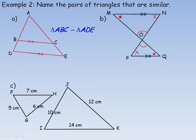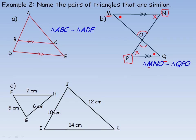Now we have three pairs of equal angles, so the triangles have to be similar. Notice that angle M corresponds to angle Q, and P and N correspond. So where you see P in one triangle, you see N in the other. The relationship would be written as: MNO is similar to QPO. M corresponds to Q, and N corresponds to P — so N is second in the first triangle and P is second in the second. O is the same in both.